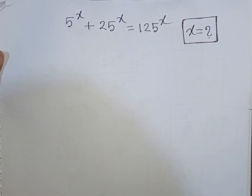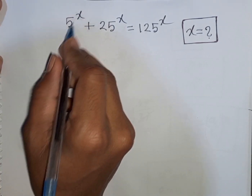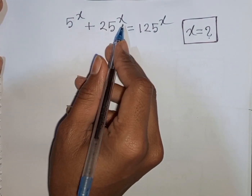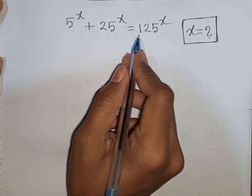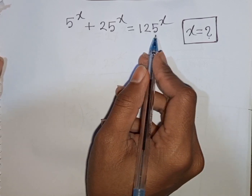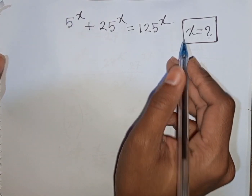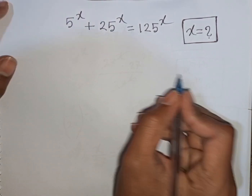How to solve 5 power x plus 25 power x is equal to 125 power x. Find the value of x.